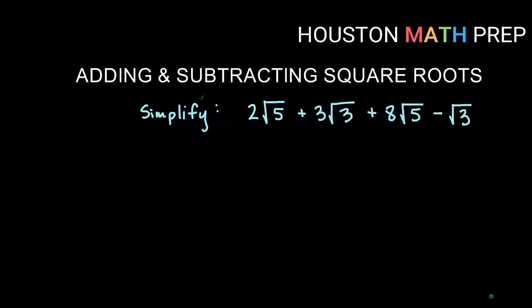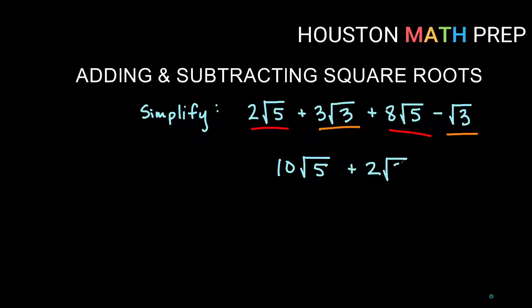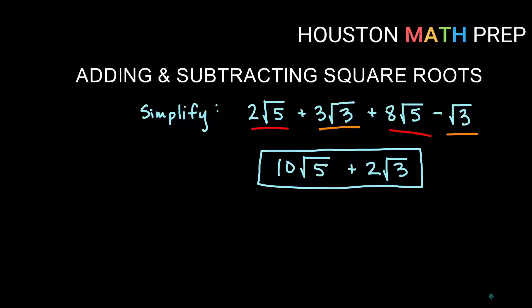Like terms have the same number under the root. Here I have a root 5 term and it is a like term with this 8 root 5 term. So 2 root 5s plus 8 root 5s gives me 10 root 5s, just like 2 cats plus 8 cats gives me 10 cats. Similarly, the root 3 terms are like terms: 3 root 3s minus root 3s. Just like 3 cats minus a cat gives 2 cats, 3 root 3 minus root 3 is 2 root 3s. We have to leave those terms separate — root 5 and root 3 are not like terms, so that is as simplified as we can go.